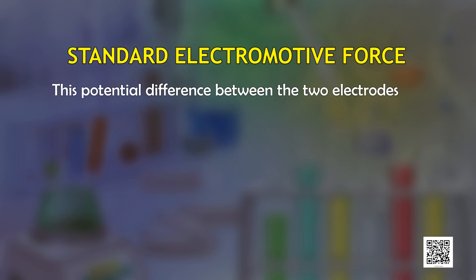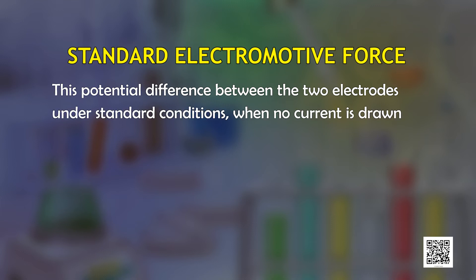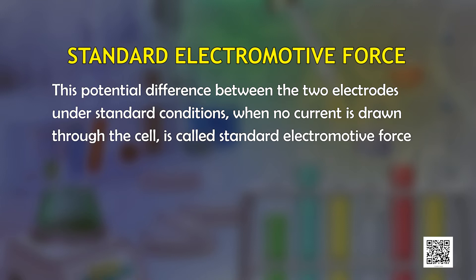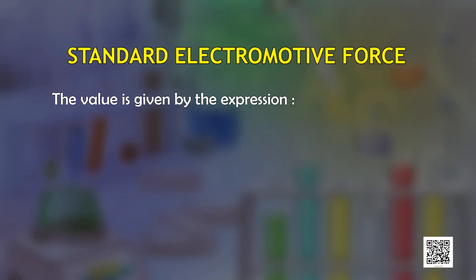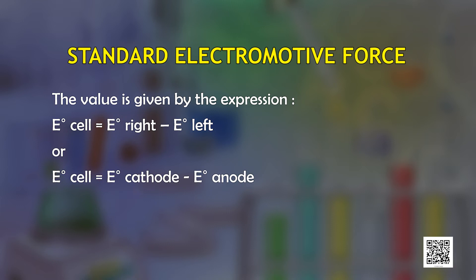The fact that electrons flow from one electrode to another indicates there is a potential difference between the two electrodes. This potential difference between the two electrodes under standard conditions where no current is drawn through the cell is called the standard electromotive force or EMF of a cell, denoted by E⁰ cell. It is measured by connecting a voltmeter between the electrodes in volts. The value is given by the expression: E⁰ cell = E⁰ right − E⁰ left, or equivalently E⁰ cell = E⁰ cathode − E⁰ anode.